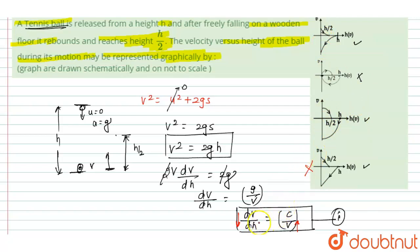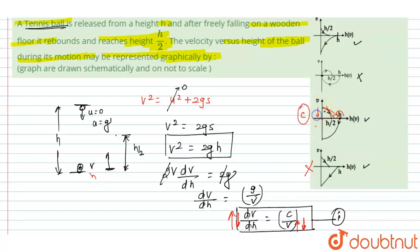Looking at the remaining two figures: if velocity increases, then the slope dv/dh decreases, and if velocity decreases, then slope increases — vice versa. At a given point, when velocity increases, slope increases. That means option C satisfies all conditions. First condition: when h = 0, it has some nonzero velocity. Second condition: when velocity increases, slope decreases, and when velocity decreases, slope increases. Therefore, option C is the correct answer.